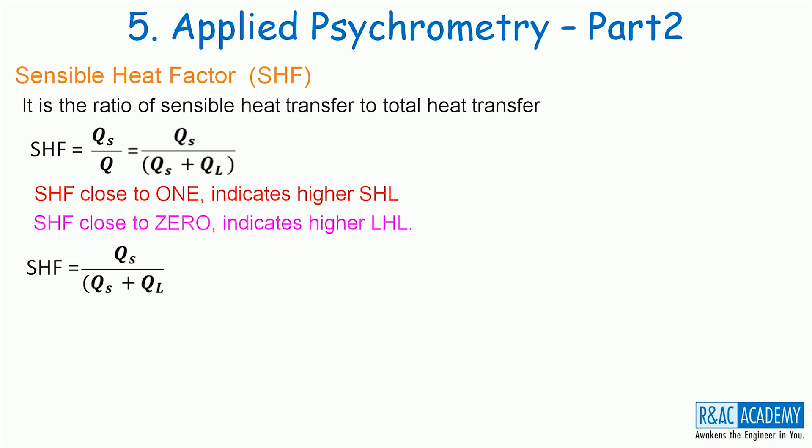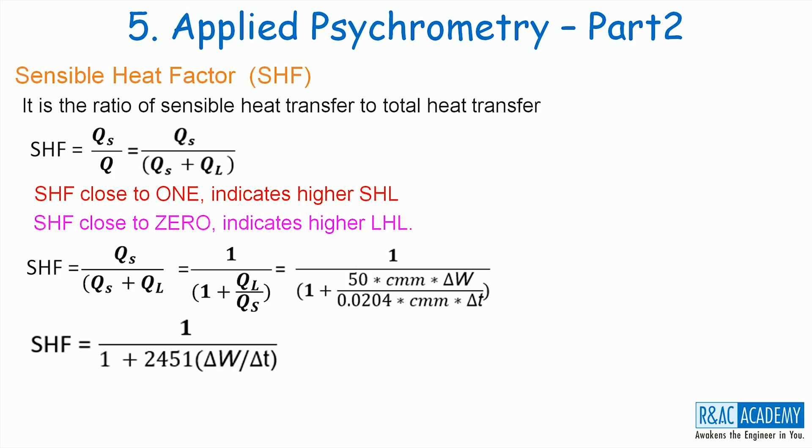The SHF expression can be rewritten by putting in the expressions related to QL and Qs. What do these terms delta W and delta T represent? Let us understand it using the psychrometric chart and consider process AC. If we draw a horizontal line from A and drop a vertical line from C, then they will intersect at B. During the process AC, the magnitude of change in temperature is represented by delta T and the magnitude of change in specific humidity is represented by delta W.